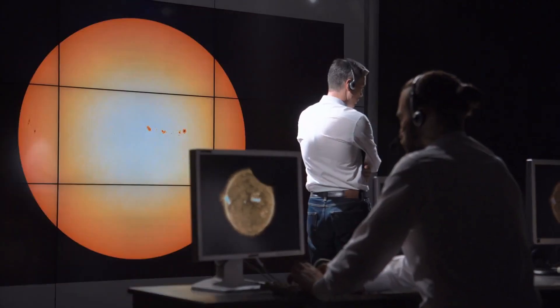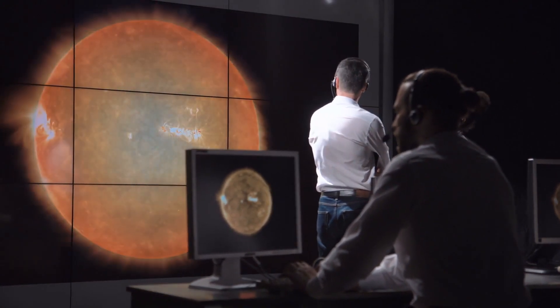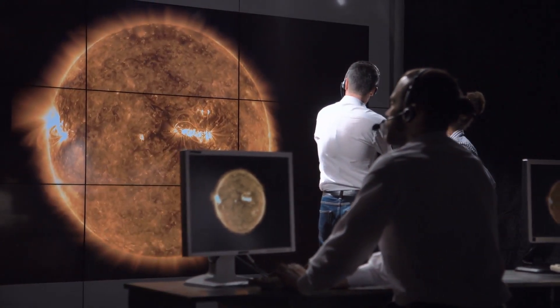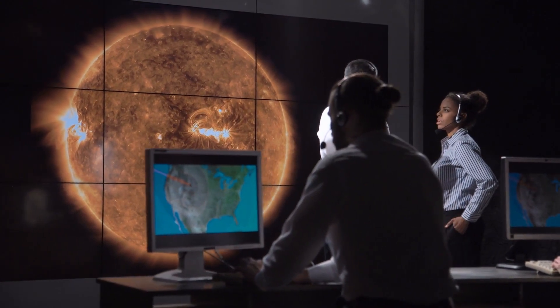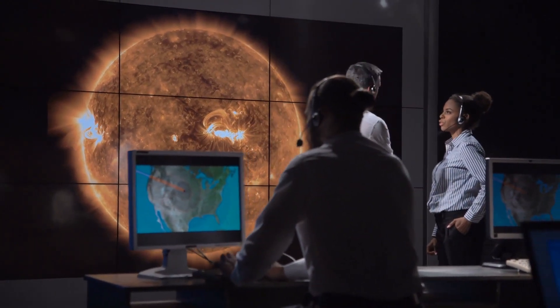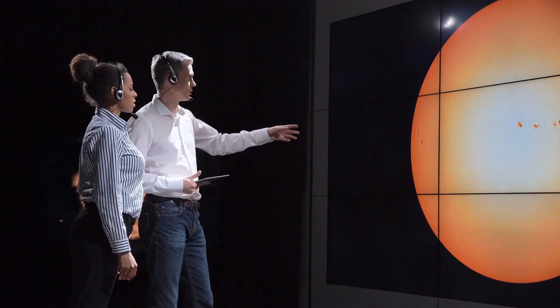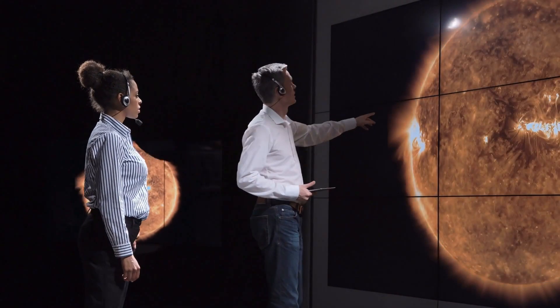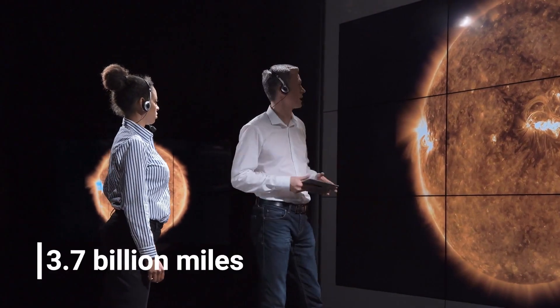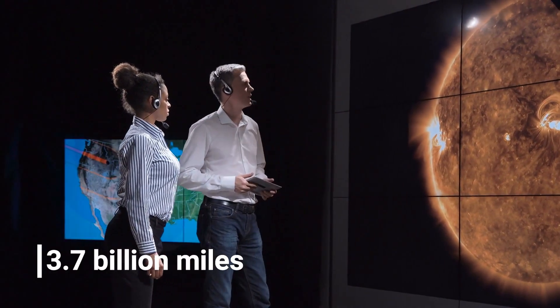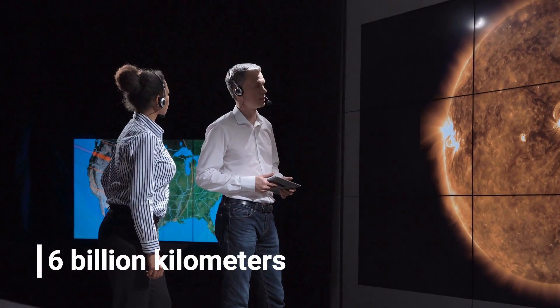On February 14, 1990, Voyager 1's cameras were pointed back and captured about 60 images of the sun and planets, the first portrait of our solar system as seen from the outside. The images were taken when the spacecraft was about 40 astronomical units from the sun, or 3.7 billion miles, or 6 billion kilometers.